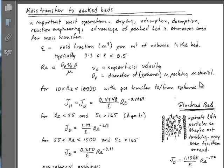We're going to introduce some of the typical correlations and calculations that you can do using these Chilton-Colburn J factors. They are very common ways of correlating mass transfer coefficient and heat transfer coefficient data and relating them to friction factors, as we noted in the last session.